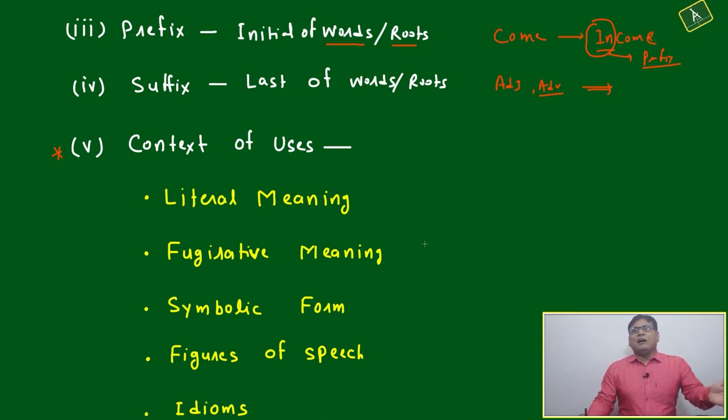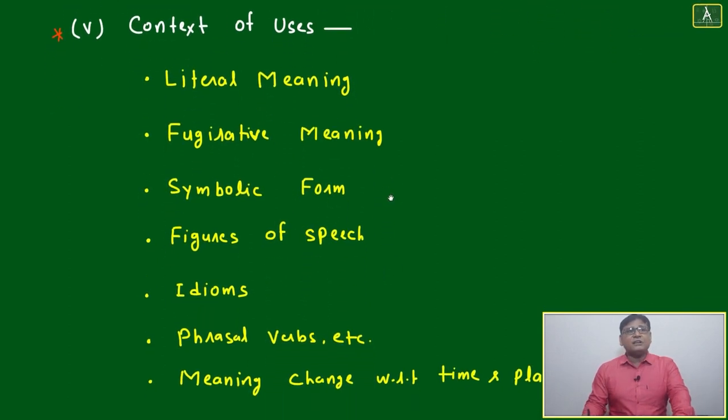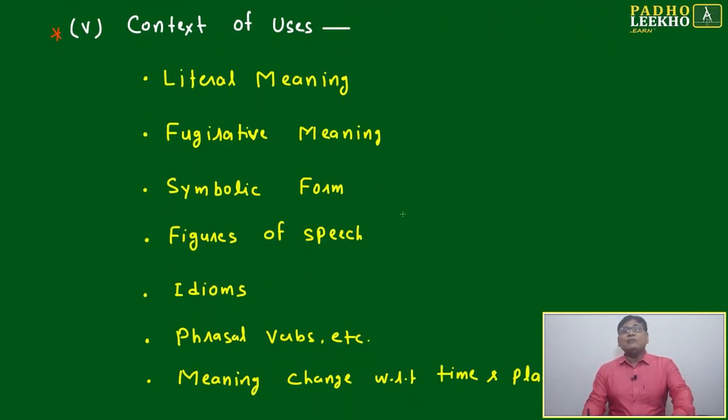If you will just memorize 100, 200 prefix suffix, that will be sufficient to understand 50,000 to 70,000 words. But context of usage are infinite. Any one word can be used in infinite way, infinite way of sense or infinite way of narratives.